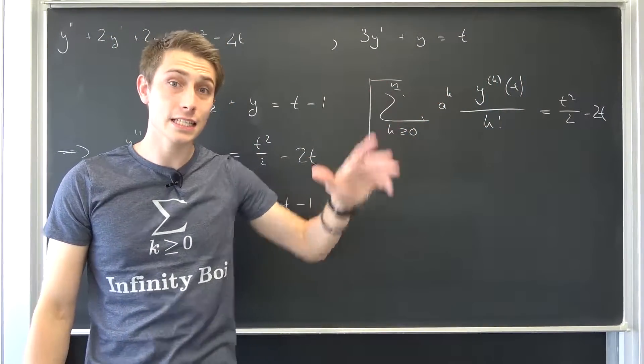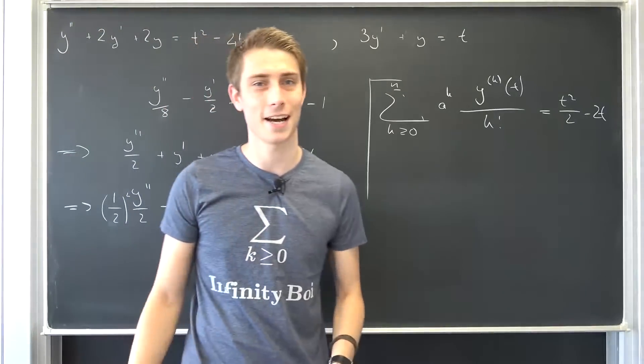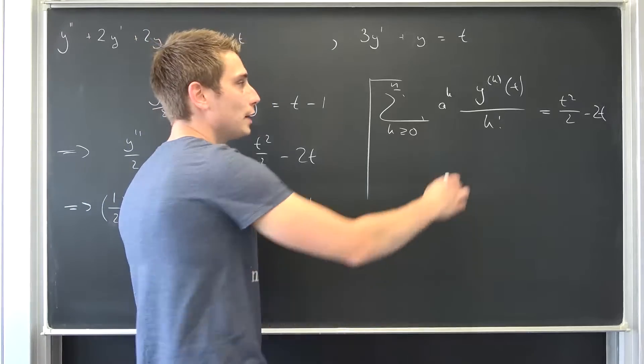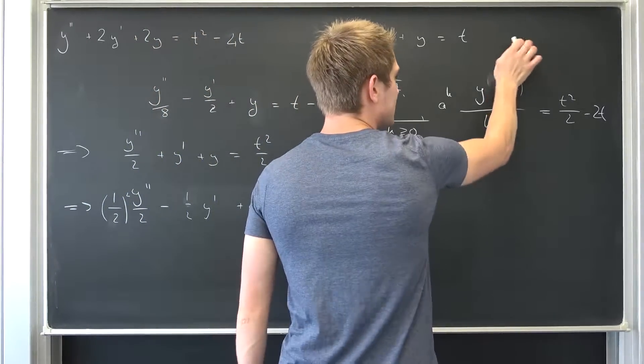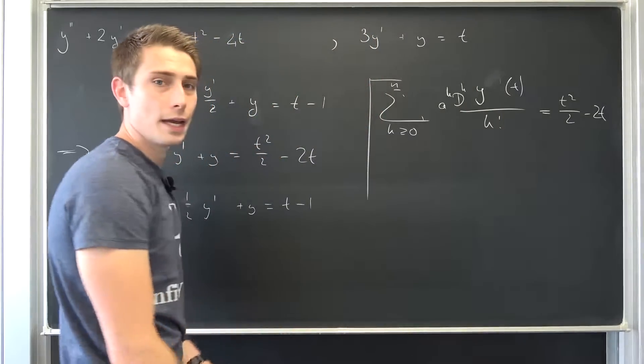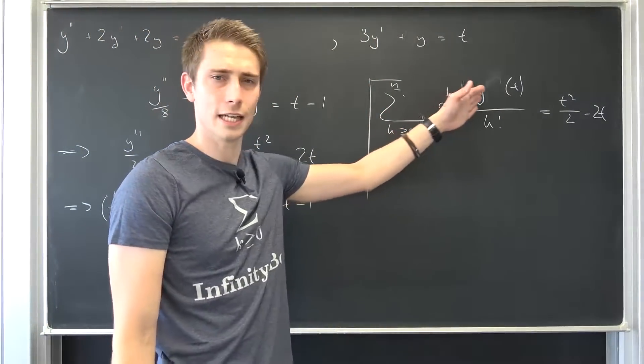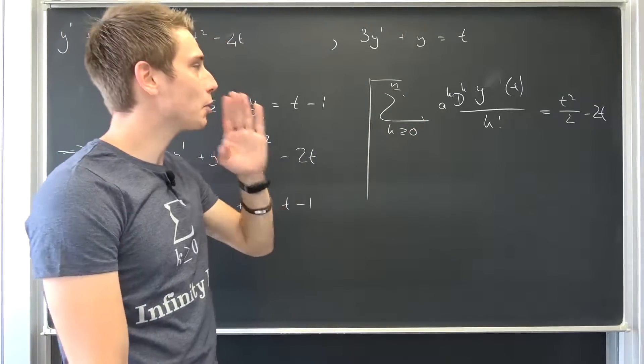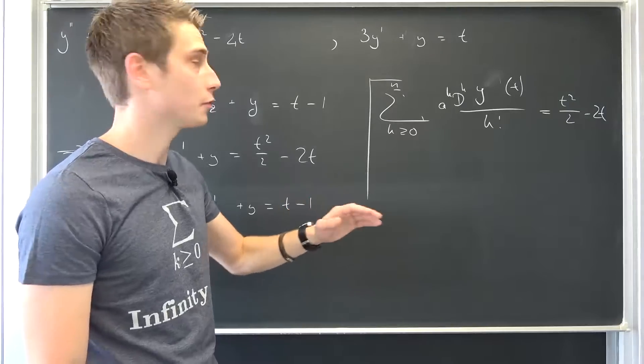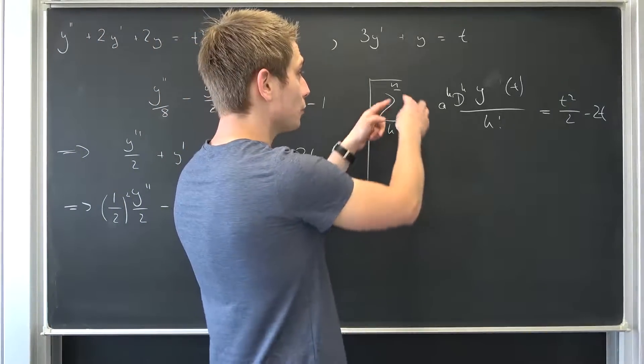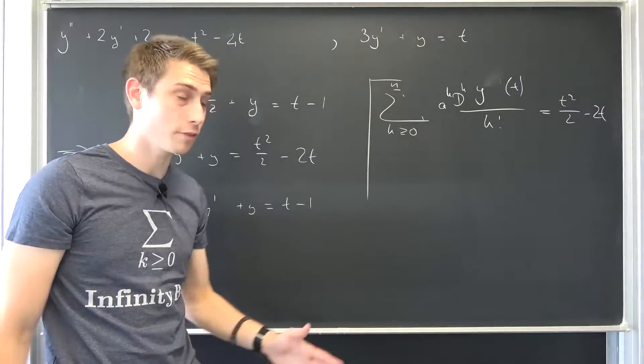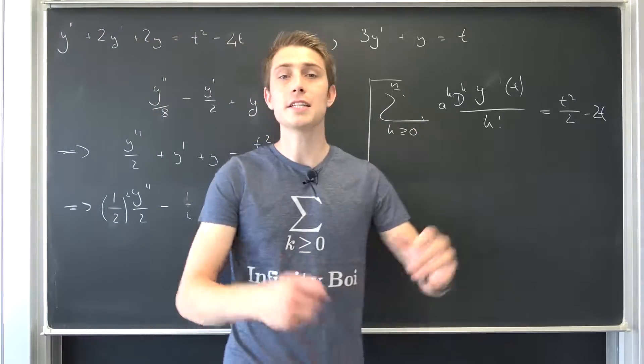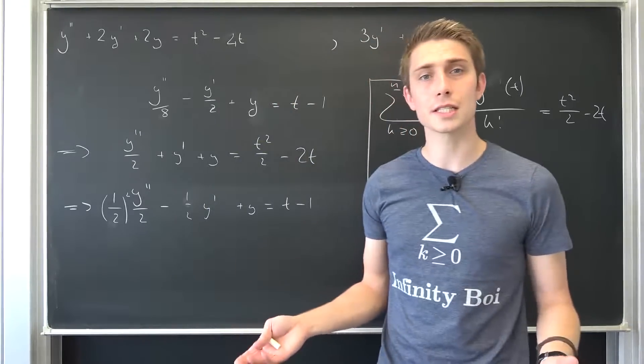And also down here we have 2 factorial, 1 factorial, 0 factorial, being equal to some, let's choose one example right here that we are going to play with, for example t squared over 2 minus 2 times t. They are of this form and this looks extremely like something that we have discussed a few days ago probably.